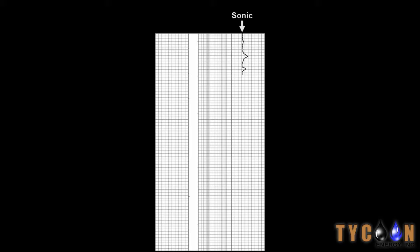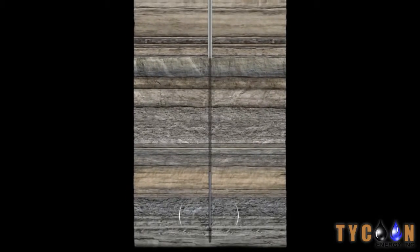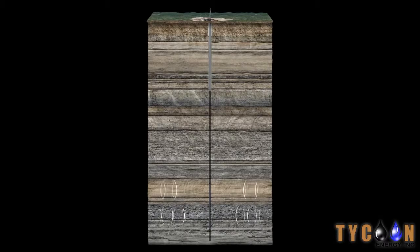The next curve represents the measurements taken by the sonic tool. It shoots sound waves into the formation and records the time they take to return. Dense rock will have a faster travel time, while porous rock will be slower.